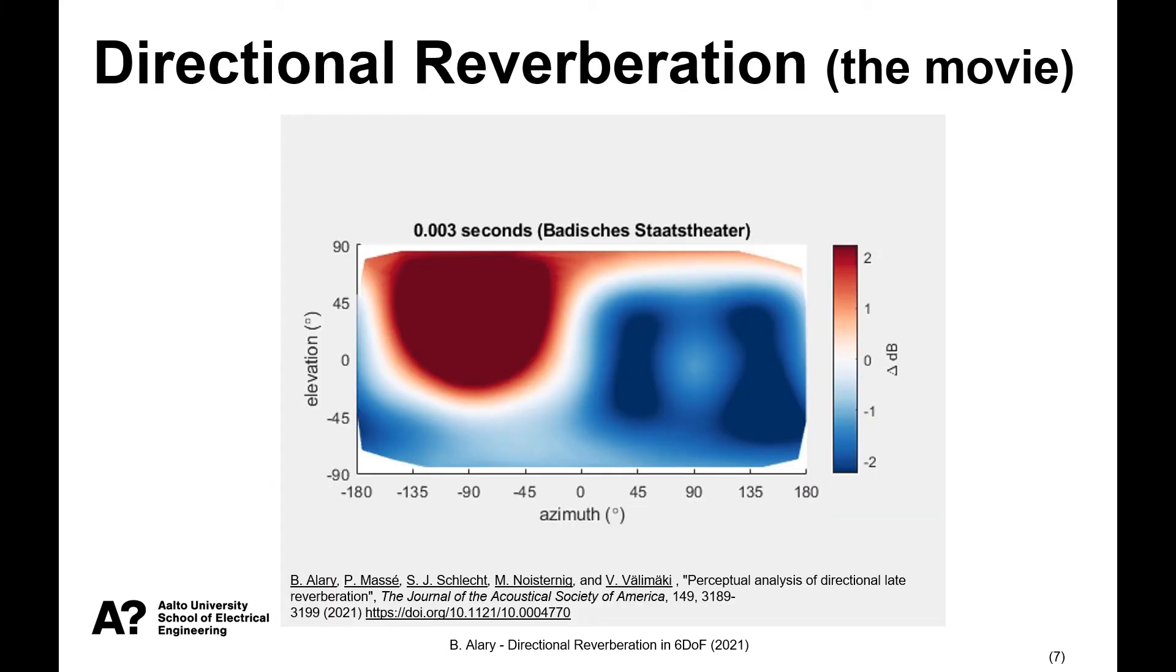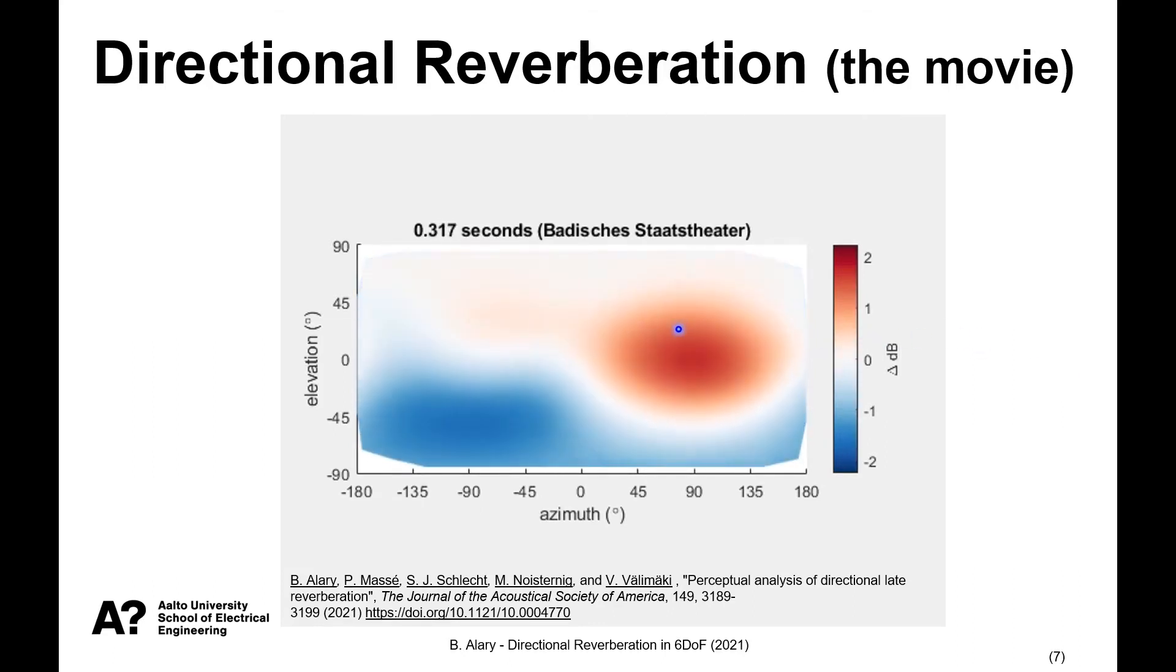To illustrate this EDC method, we can see from this pre-recorded impulse response how it behaves over time. So the red color represents angles with more energy in the decay, and the blue less.